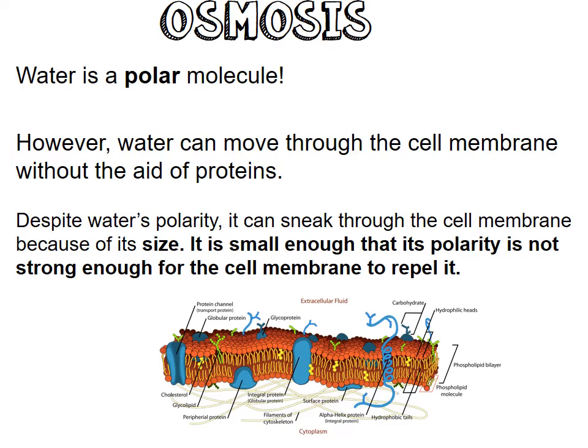Despite water's polarity, it can sneak through the cell membrane because of its small size. It's small enough that its polarity is not even strong enough for the cell membrane to repel it — and that doesn't happen often, just with water.